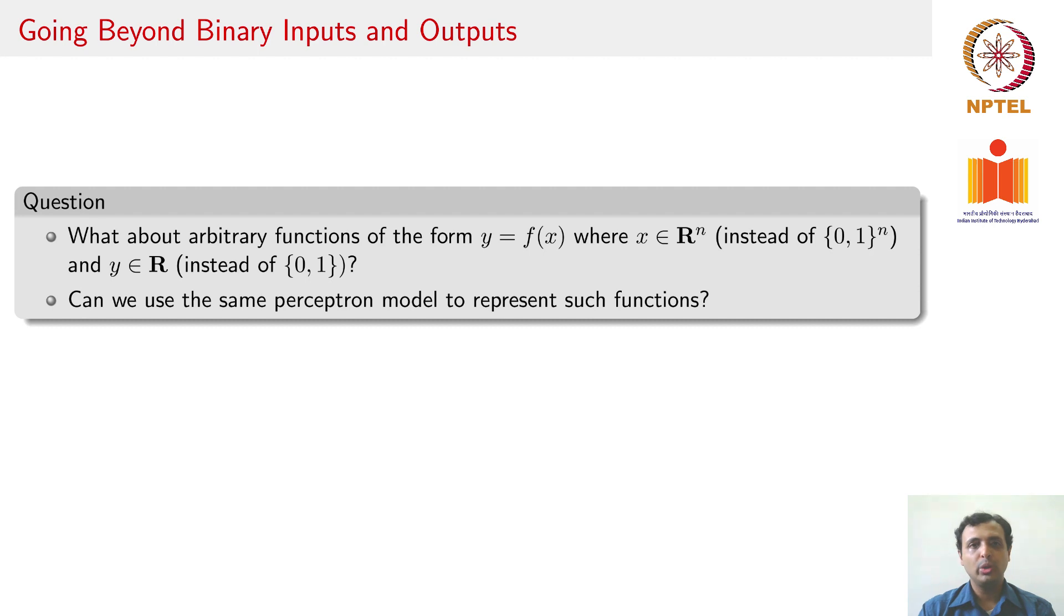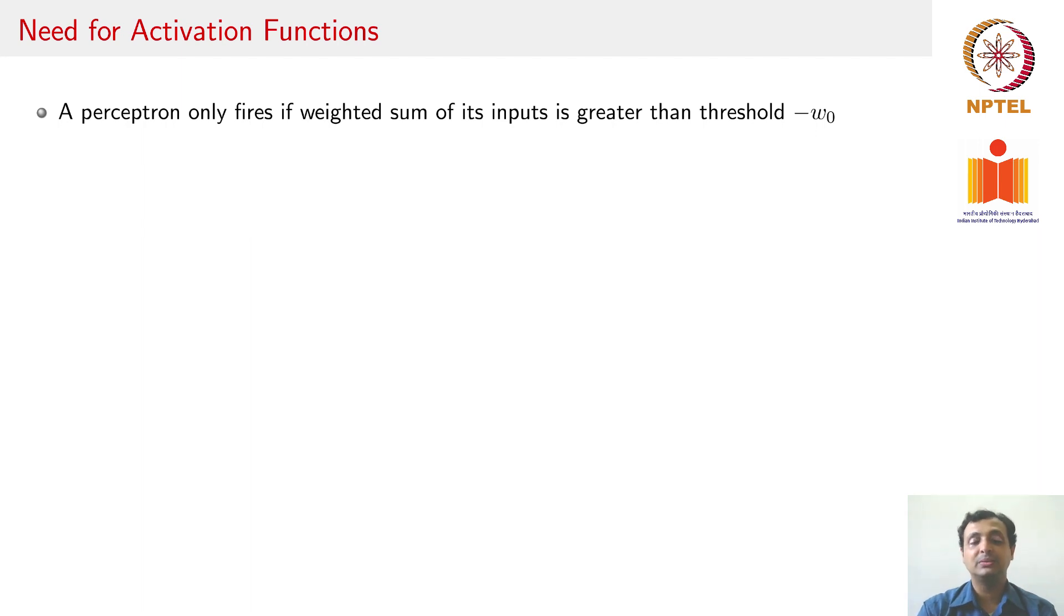Now, let us ask the question, what do we do if you want to go beyond binary inputs and outputs? We only spoke about Boolean inputs. We did say that perceptrons could handle inputs beyond binary, but are there any relationships that we understand? The previous result that we showed was only that a multilayer perceptron with 2^n hidden neurons can solve any Boolean function. What if that function was not Boolean? Can we use the same perceptron model to represent such functions?